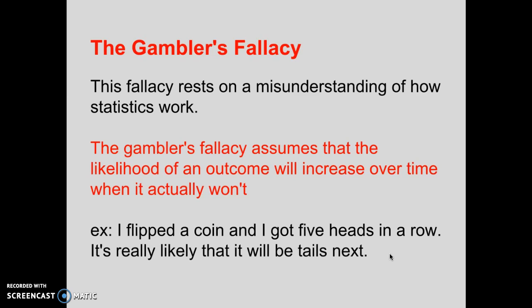Our next fallacy is the gambler's fallacy, and this is a really important one. It rests on a misunderstanding of how statistics work. The gambler's fallacy assumes that the likelihood of an outcome will increase over time when it actually won't. The classic example: I flipped a coin and got five heads in a row, therefore I think it's really likely it will be tails next. What you're assuming is that the statistical likelihood of an event will increase over time simply because it hasn't happened in a while. But that's not how statistics work — you have a 50% chance of heads or tails every single time you flip. It's possible to get 99 heads in a row, and the likelihood of that hundredth head is still only 50%. I know it feels counterintuitive, but that's just how statistics work.